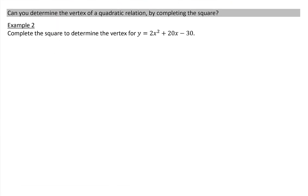Second thing, can you determine the vertex of a quadratic relation by completing the square? So we have partial factoring, or symmetry, but we also have the method of completing the square to determine a vertex. So remember, the first step for completing the square is to factor out the a value. So the a value here is 2, and we only factor it out of the first two terms. So we have 2 times x squared plus 10x. We leave our minus 30 on the outside.